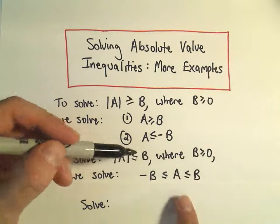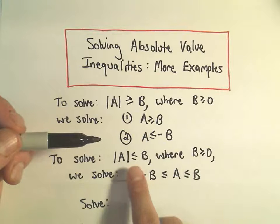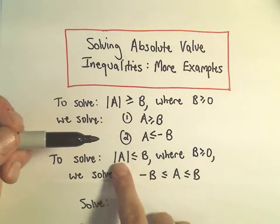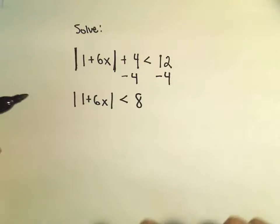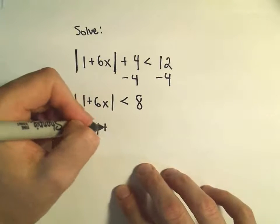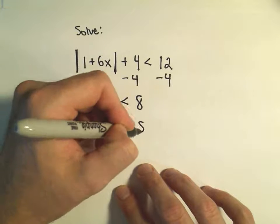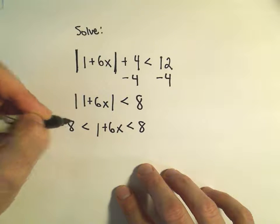So what we do is, again, we basically just remove the absolute value, take the stuff in the absolute value, and put it in between the positive and the negative of the given number. So in this case I just take 1 plus 6x, less than positive 8, greater than negative 8.